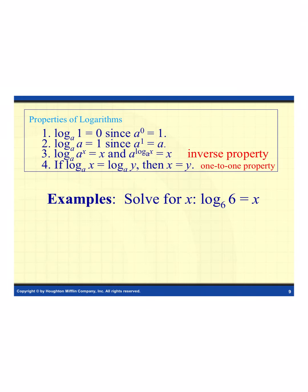Let's do some examples, indicating which properties we use. First, solve for x: log base 6 of 6 equals x. The base and value are the same — that's property 2. When the base and value are the same, the whole expression simplifies to 1. So x equals 1.